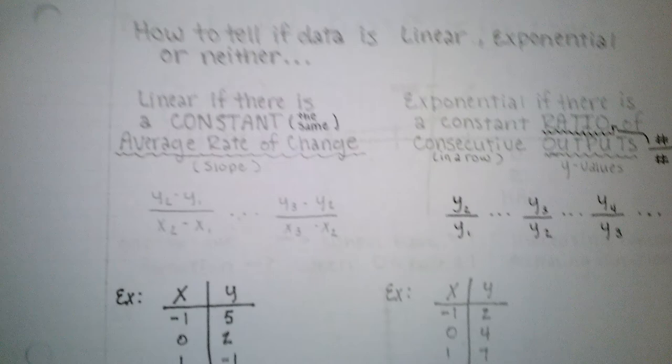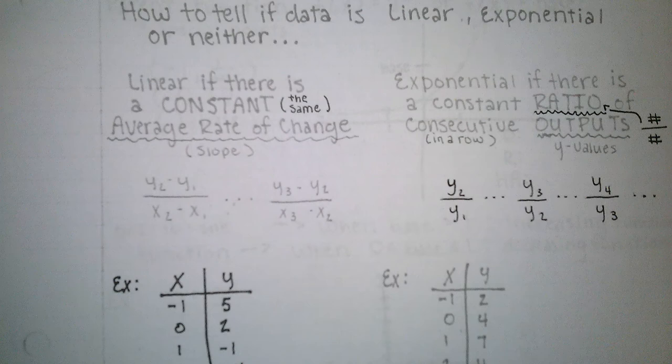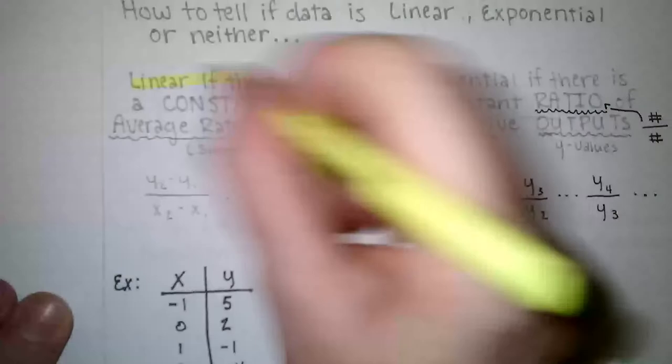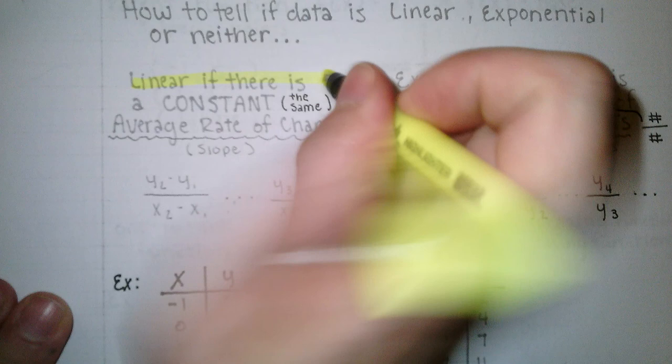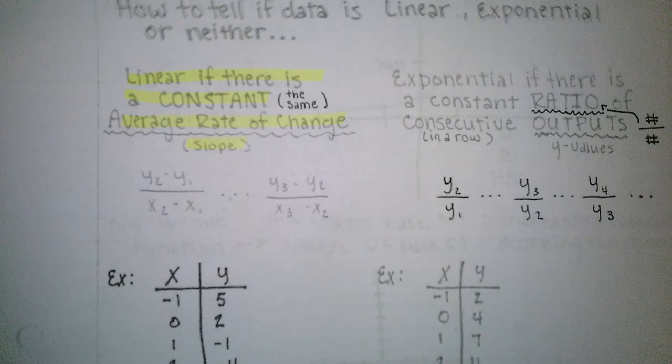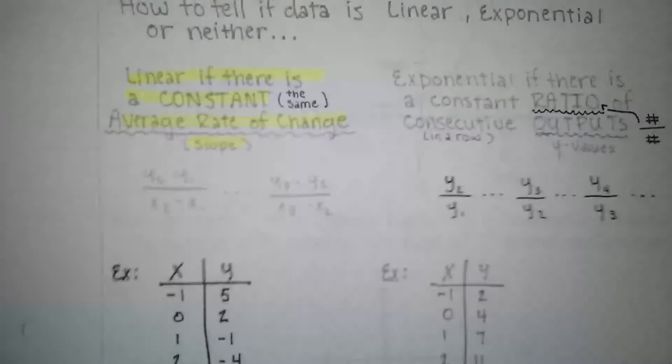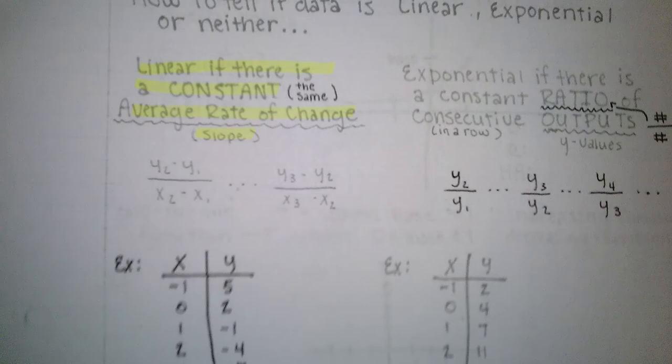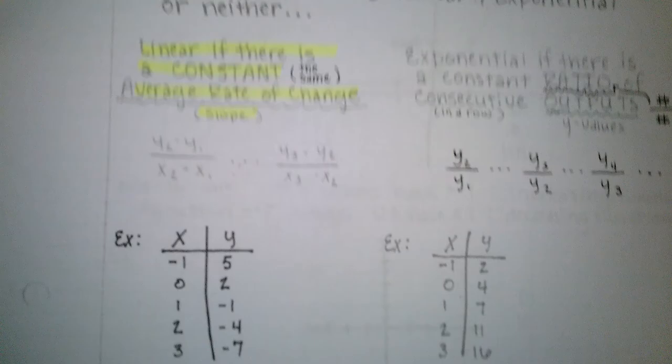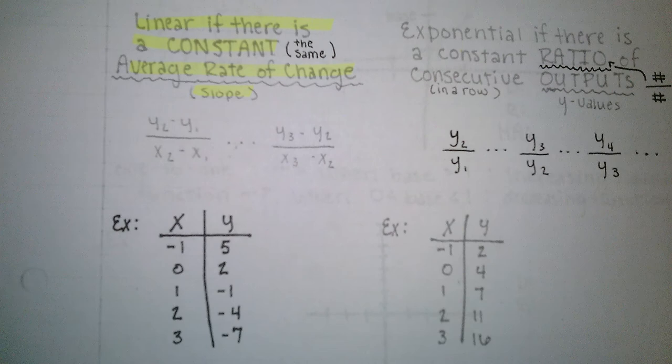Your data is going to be linear if there is a constant average rate of change, which is a fancy way of saying slope. So if the slope is the same throughout all of your data, then you're going to have a linear function. The way that we check that is we're going to actually find the slope between each consecutive ordered pair and check to see if they're the same.